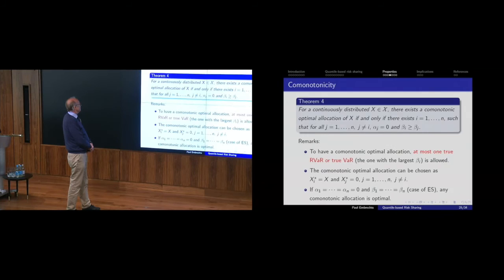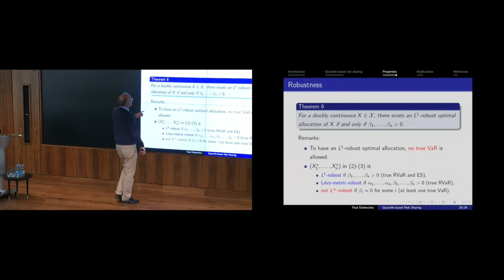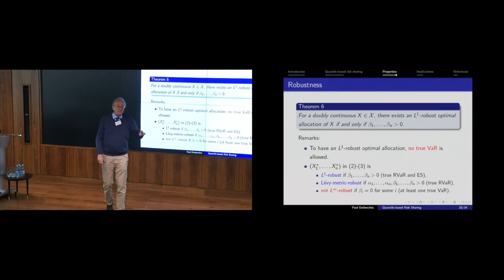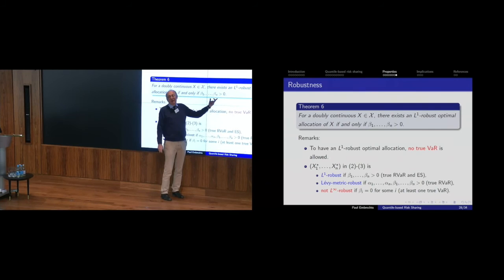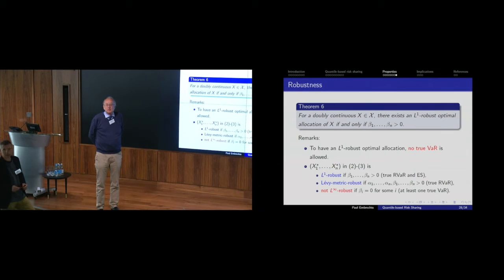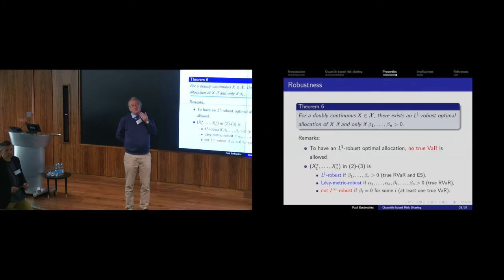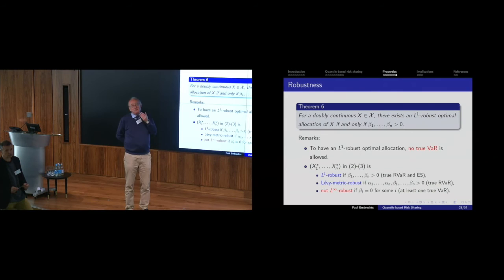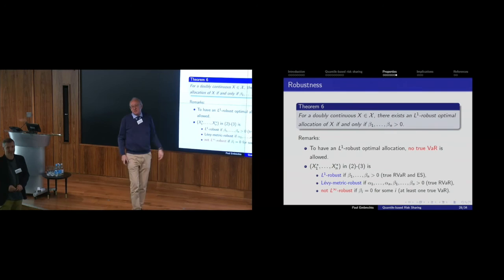It says you should allocate taking more of the tail into account and not disregarding the tail — you should have Expected Shortfalls. A second question: you gave the definition of robustness as changing the allocation a bit implies the risk measure changes a bit. But you also mentioned that if you change the risk measure a bit, the allocation changes a bit. Would the two definitions be equivalent — transporting robustness of the risk measure to robustness of the allocation? Presumably there is a connection, but it's not fully worked out.